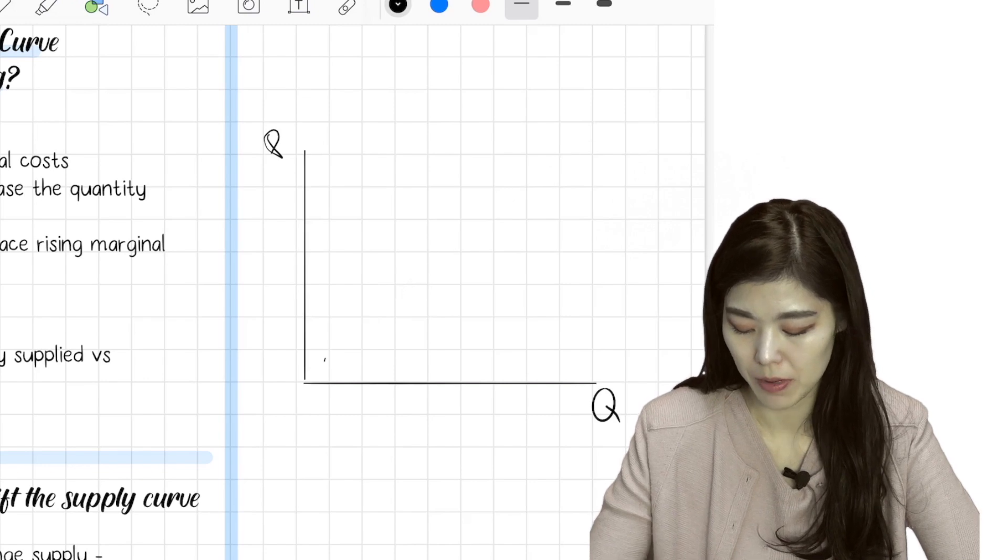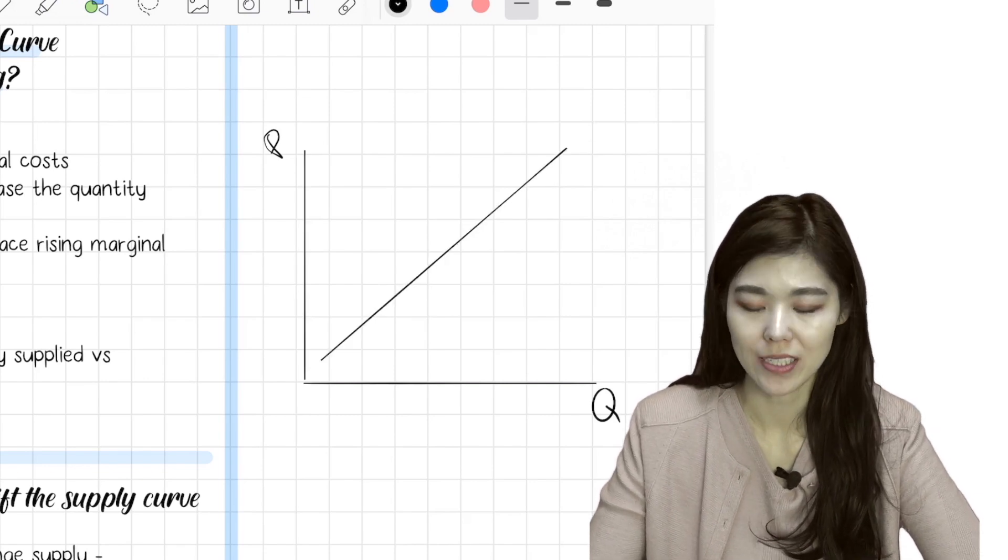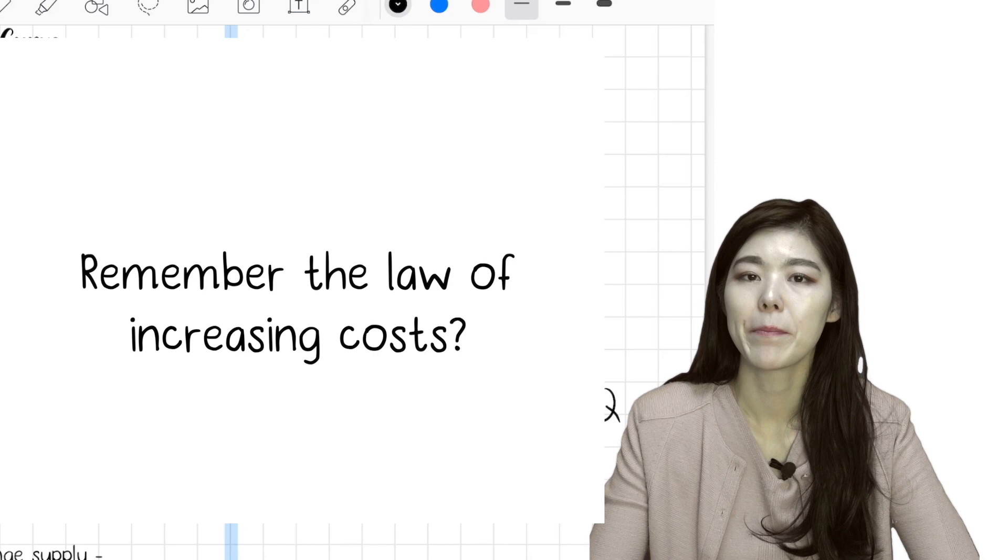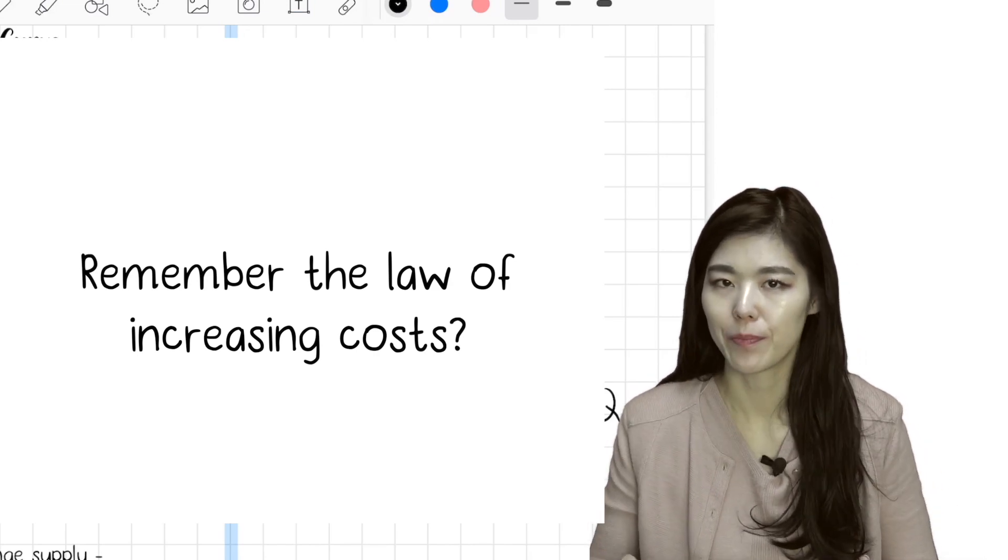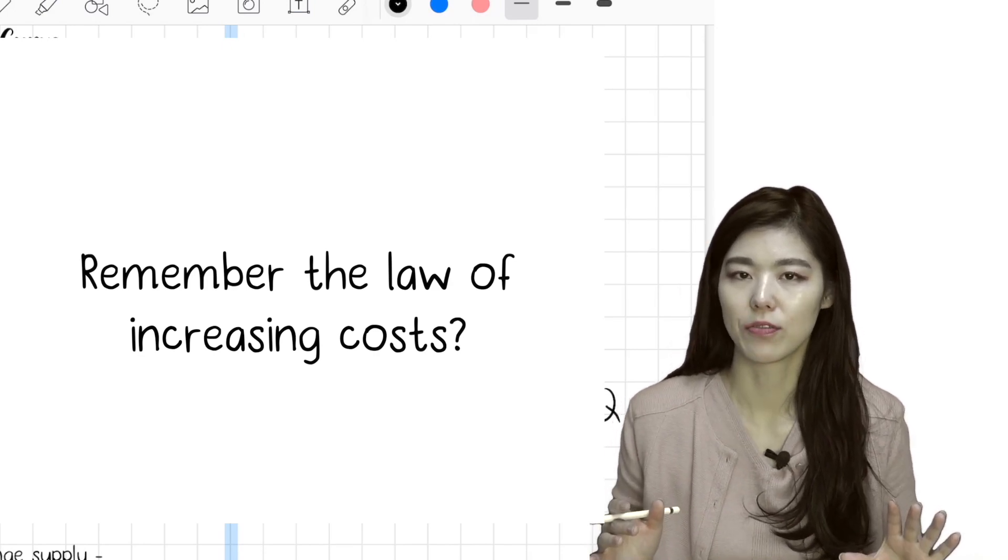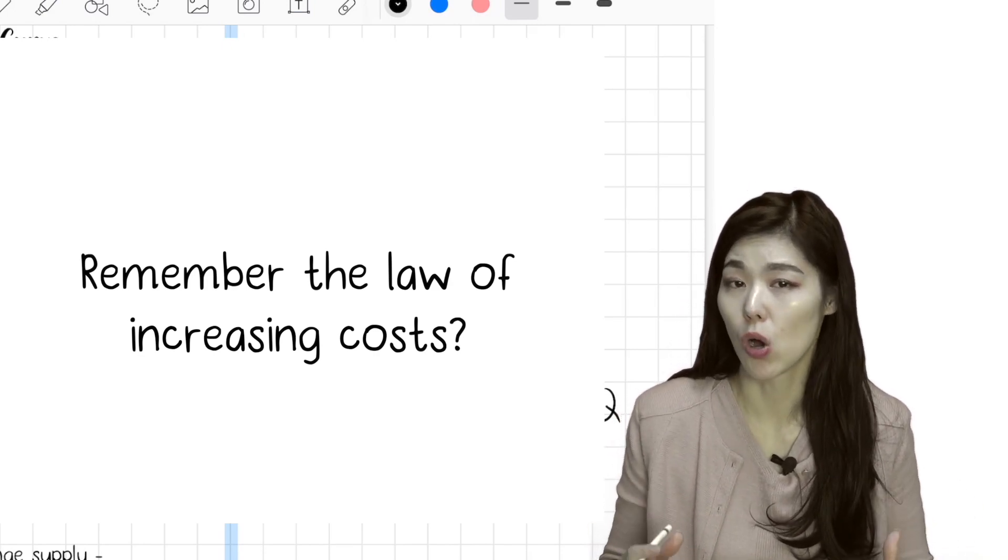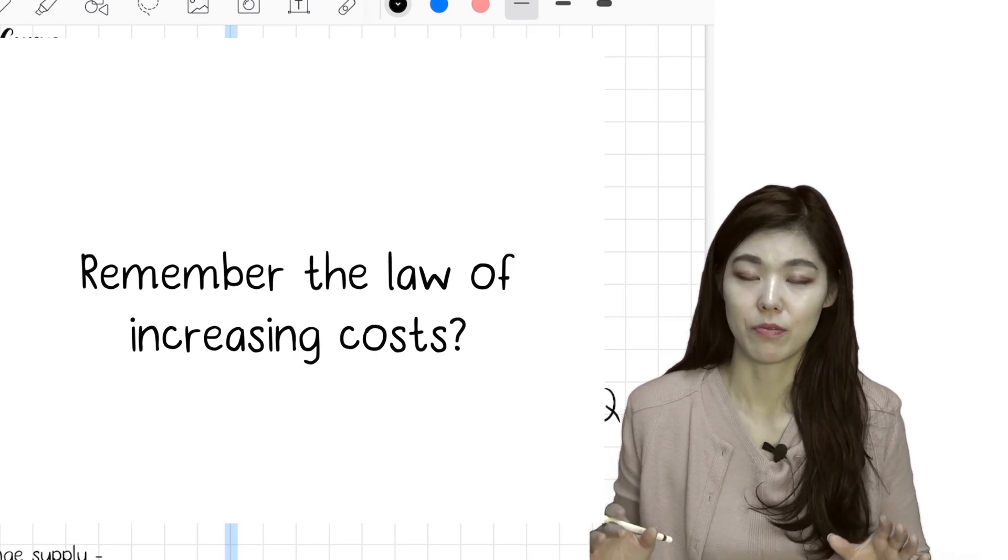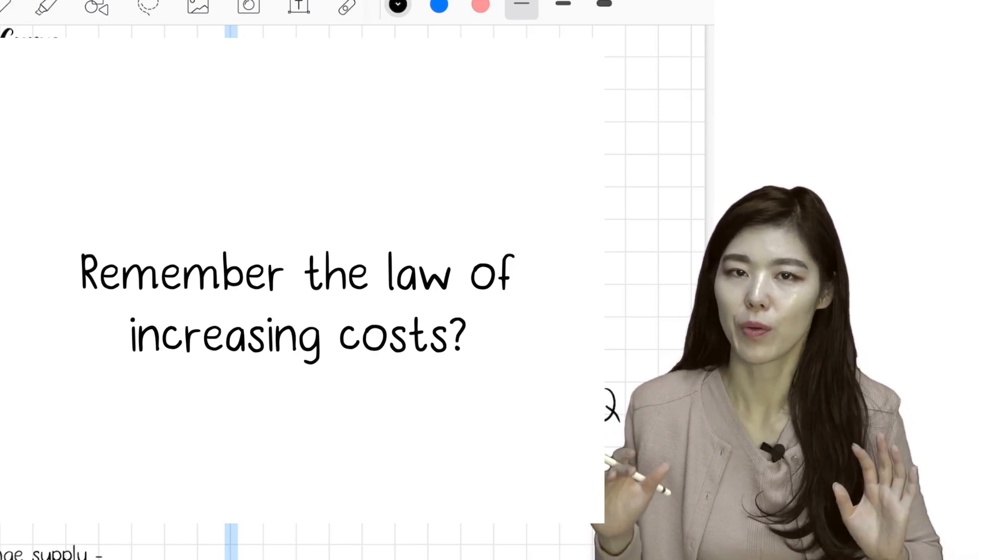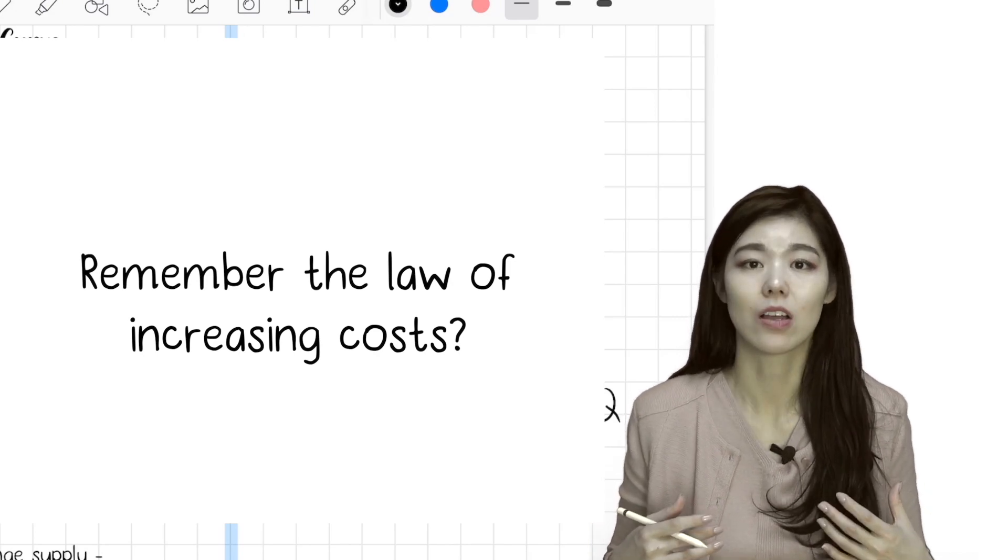So the supply curve will look like this. Why is it upward sloping? Remember the law of increasing costs. When you're doing like one to two push-ups, then the marginal cost of doing the second push-up is low. But then the marginal cost of doing the 99th push-up from the 98th push-up, that one more push-up would need a lot of effort, would need a lot of marginal cost.